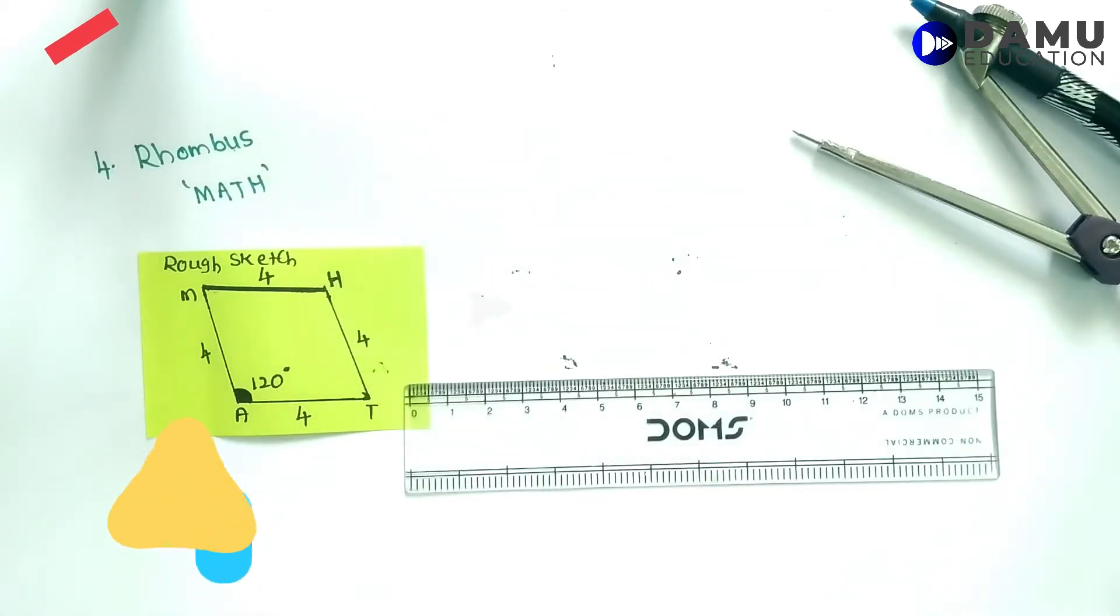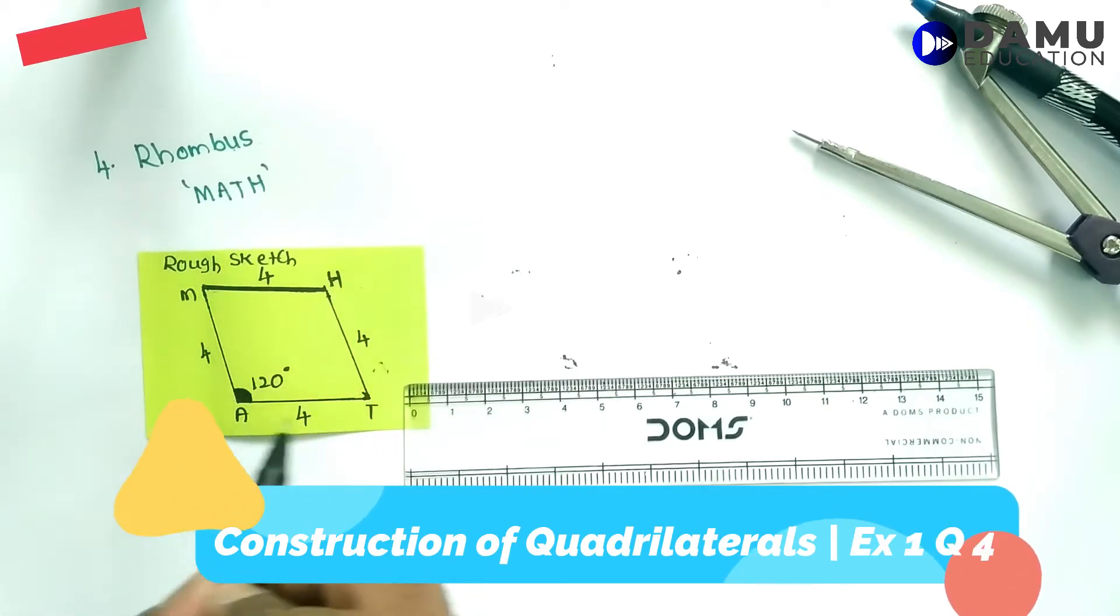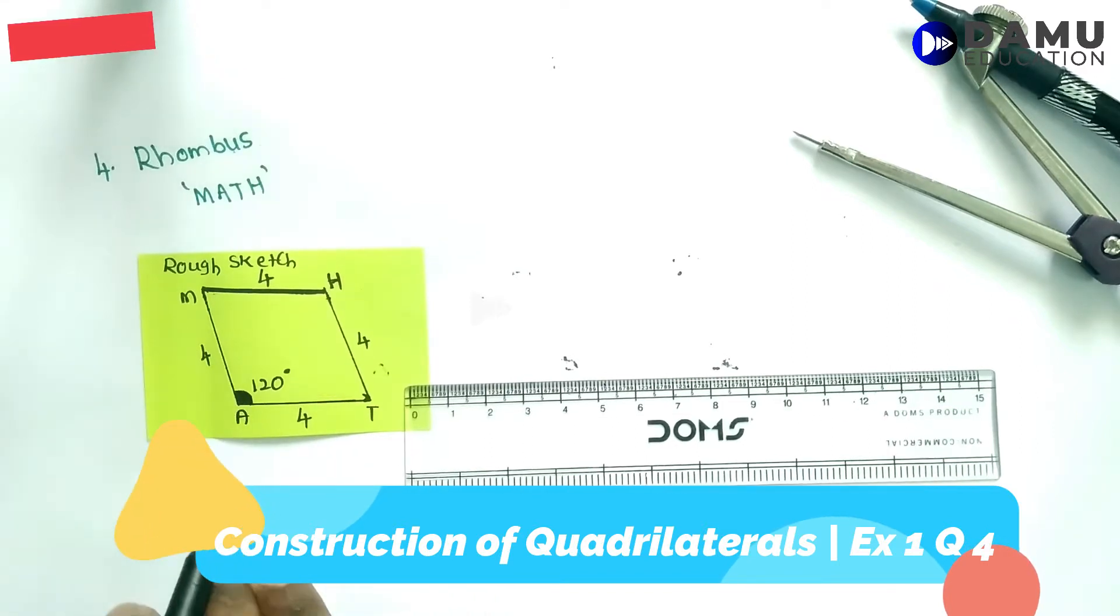Hello, our next question is: construct rhombus MATH where side AT equals 4 cm and angle MAT equals 120 degrees.